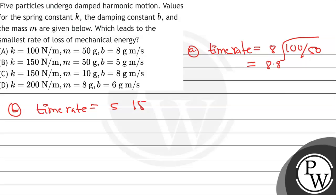For part B, 5 times the square root of 150 over 50, this equals 8.5.